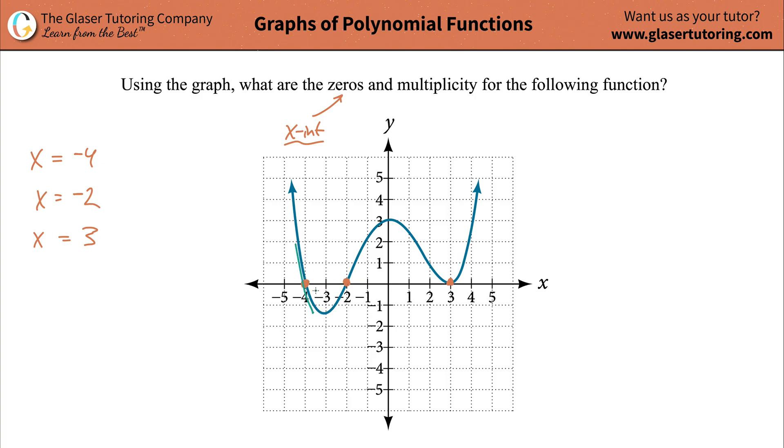If the graph crosses, it's odd. It's an odd multiplicity. So if you notice, it crosses it there. It also crosses it here. But it doesn't cross that x-axis there. It kind of does a little bump-a-rooski, a little bump and turn.